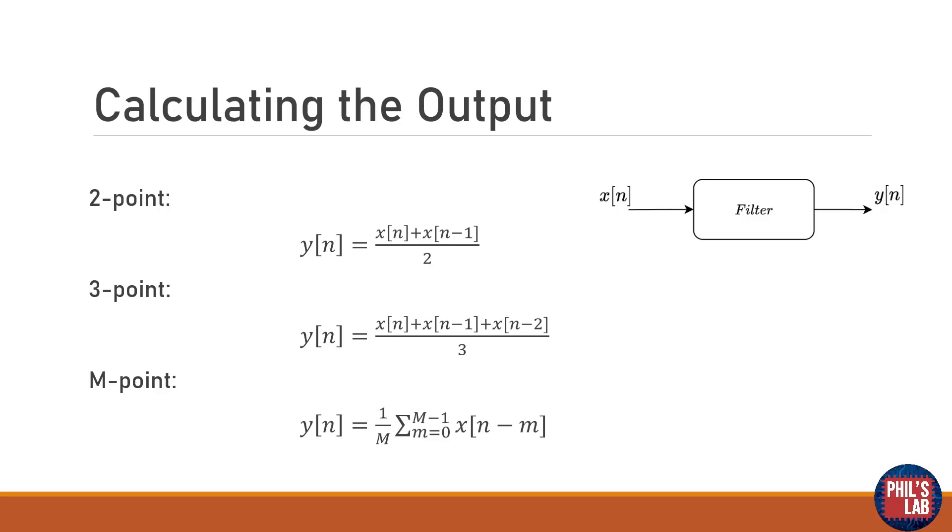Similarly we can expand this for the three-point moving average. We take the current input sample, the previous input sample and the input sample before that, add them together and divide by 3. In general you can write this as an n-point moving average filter where you typically do a summation and divide by the number of points.